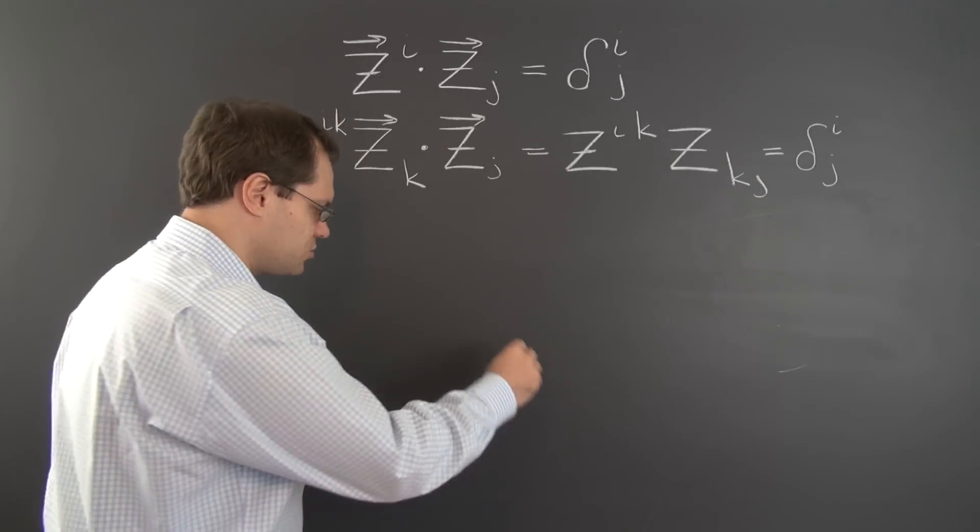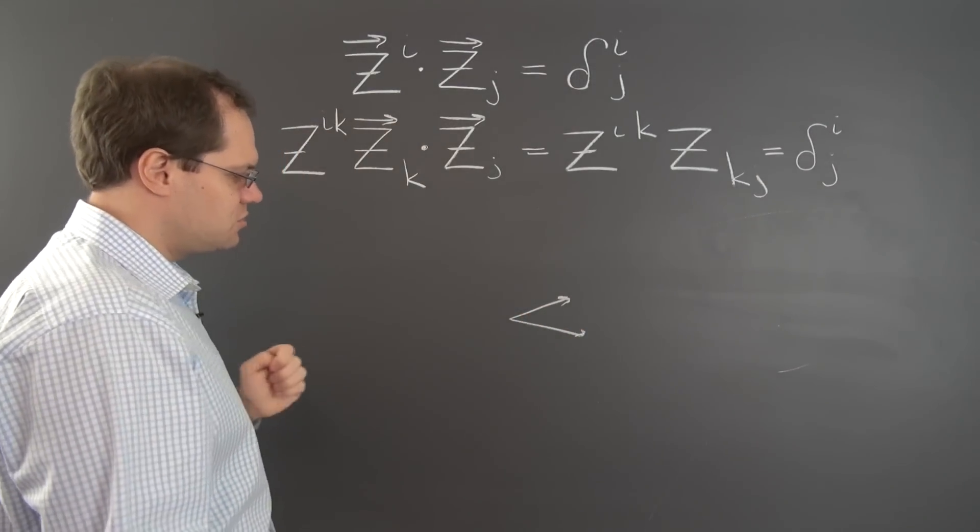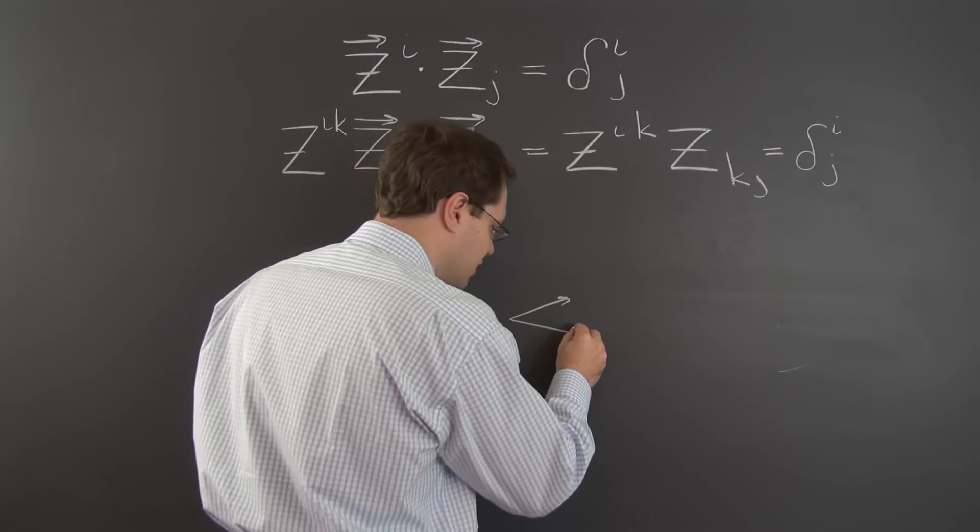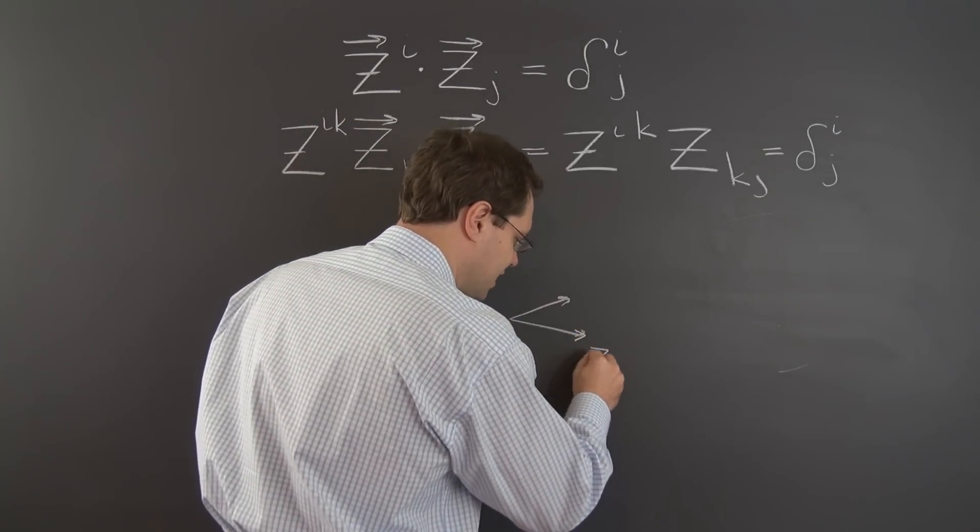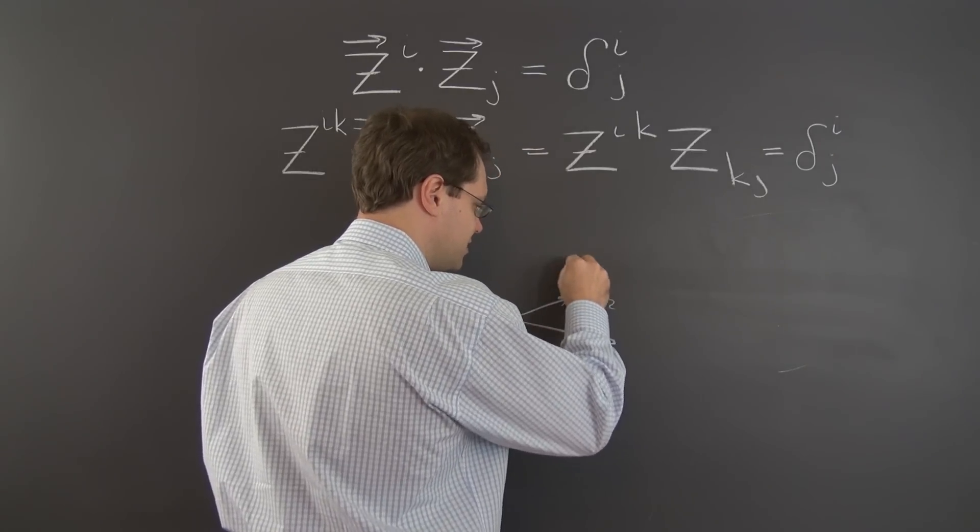So when we try to draw them, of course, it will not be orthogonal in any way. Should we do it in two dimensions or three dimensions? Let's stick to two dimensions. So if this is our covariant basis, z_1, z_2.